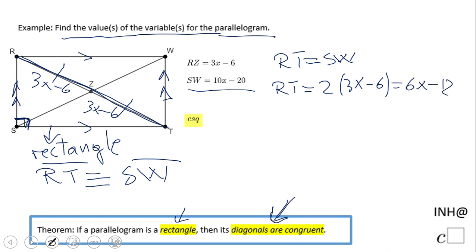So now we can use this property. We're going to have RT, which is 6x minus 12, equals SW, which I said is given to us as 10x minus 20. We need to do an extra step here. Remember this extra step and you should be fine. Subtract 6x from both sides. This is algebra.